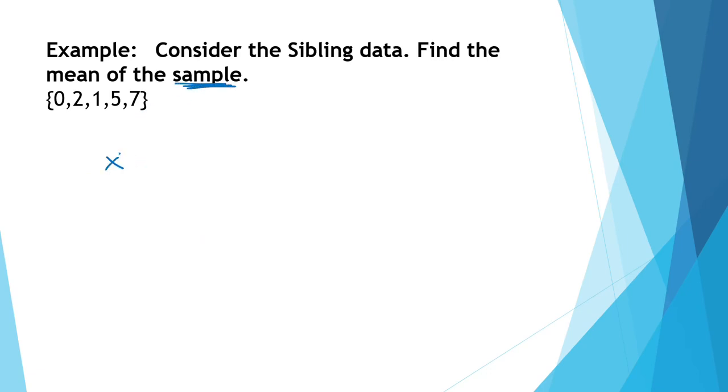In this case, we have one, two, three, four, five individuals surveyed. So the sample size is five. And so we can add up the values, zero plus two plus one plus five plus seven, and divided by our sample size five.